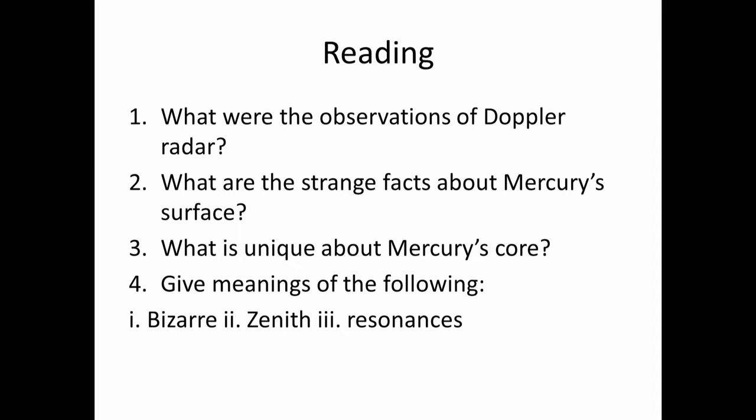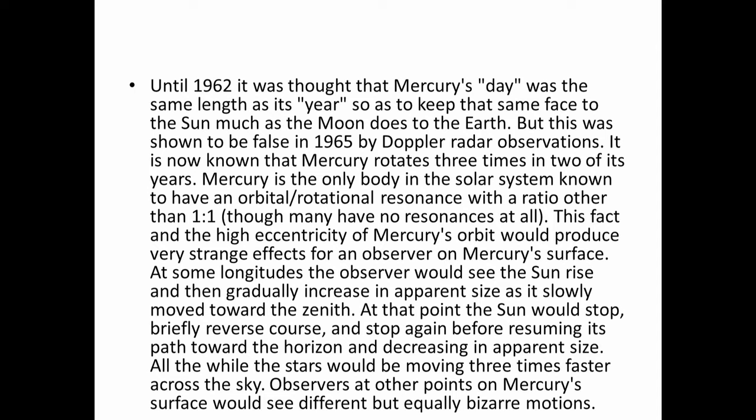The questions are: What were the observations of Doppler radar? This passage is about the planet Mercury. What are the strange facts about Mercury's surface? What is unique about Mercury's core? Also, consult your dictionary and look up the meanings of bizarre, zenith, and resonances. Please pay attention to these questions, note them down, and then we will read together.